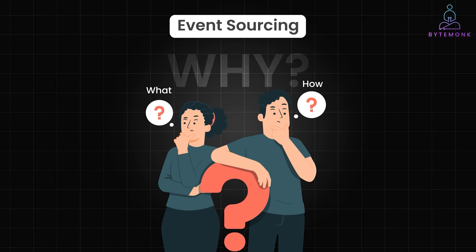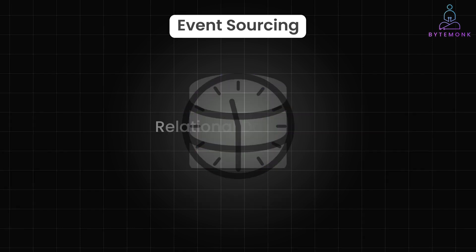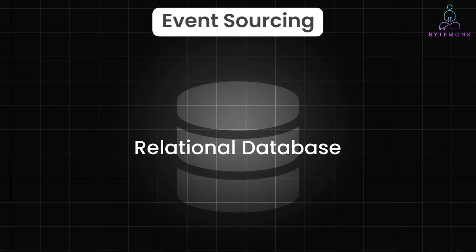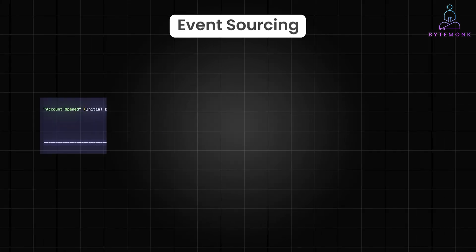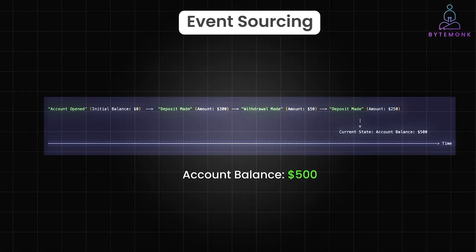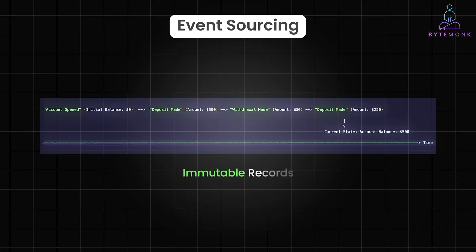Event sourcing is like turning your application's memory into a time machine. It is an architectural pattern where state changes are represented as events stored in an append-only log. Unlike a typical relational database that stores only the current state, event sourcing records every change as an event, preserving history and enabling richer context. Instead of just remembering the latest state of an object like account balance is $500, we store every action that led to that state as an event — immutable records stored in an append-only log.